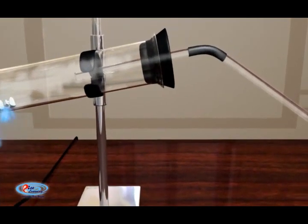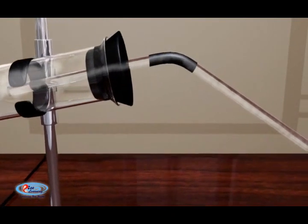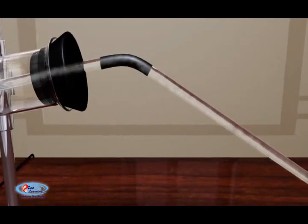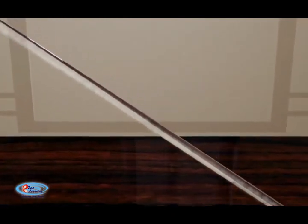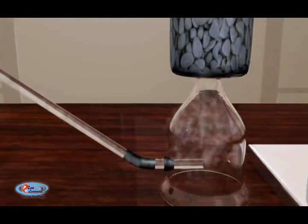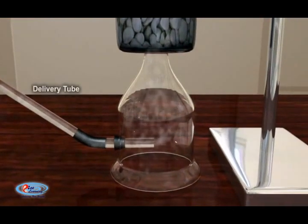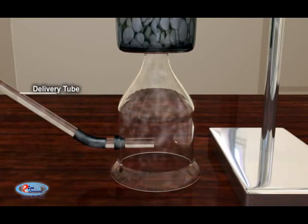We can easily observe that the mixture of ammonium chloride and calcium hydroxide transfers into a delivery tube. The calcium oxide will absorb the water produced in the reaction and ensure that the ammonia gas is dry.